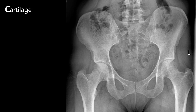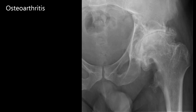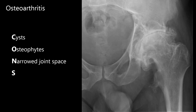Next is cartilage. There are three cartilage containing joints that we need to assess: the acetabular joint, pubic symphysis and sacroiliac joints. Whilst inspecting these, we are looking for any signs of arthritis or dislocation. This patient has severe osteoarthritis in their left acetabular joint. There are four osteoarthritis signs that can be remembered using the mnemonic CONS: cysts, which are fluid filled sacs sometimes found in the femoral head; osteophytes, which are small bony growths; narrowing of the joint space, which should be 3-5mm in a healthy adult hip joint; and subchondral sclerosis, which is where the bone underneath the cartilage increases in density. All four of these signs can be seen in this x-ray.